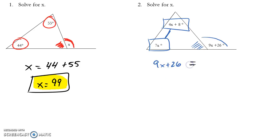That means my 9x plus 26, my exterior angle, equals, and I will add, my 4x plus 8 and my 7x. Now it's a matter of doing a little bit of algebra to find what my x is equal to.